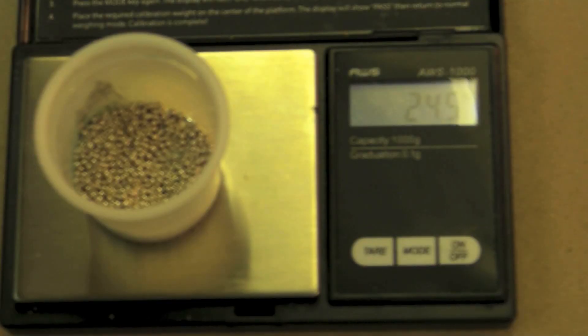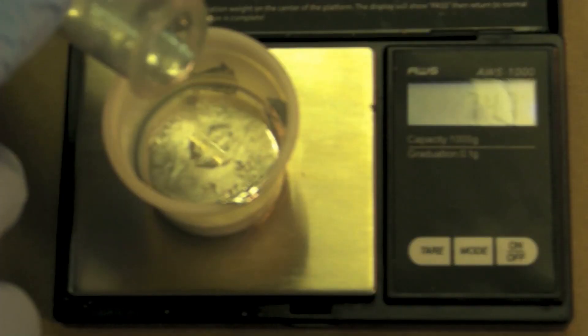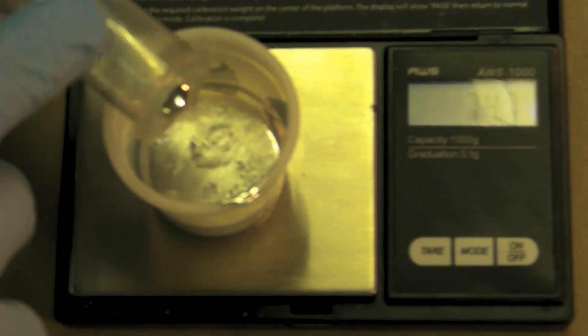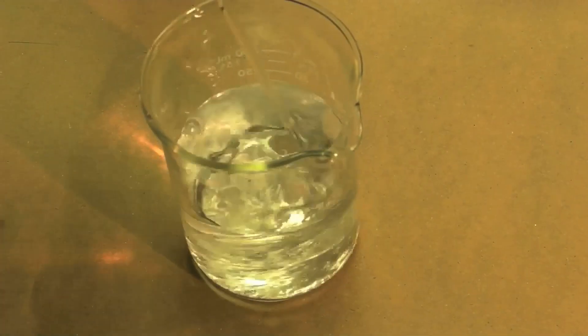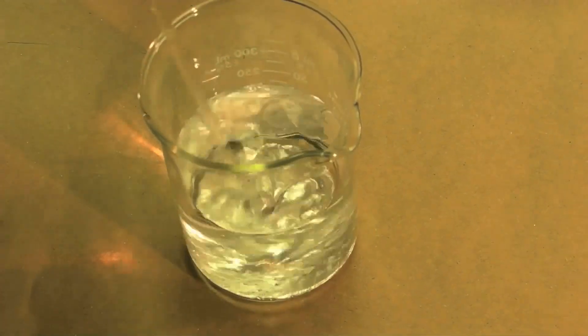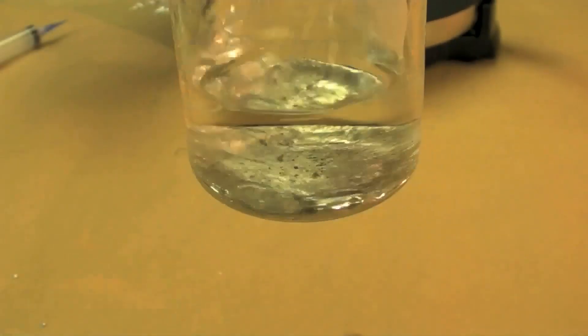I weighed out the indium and dumped it into the deionized water. Then I weighed out the gallium and added it to the flask with the indium and the deionized water. I used a glass stirring rod to stir the two metals together for 30 seconds. The deionized water serves as a buffer to keep the metals from oxidizing. They form an alloy quickly.